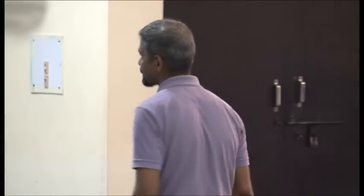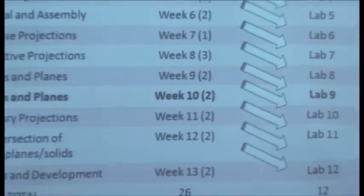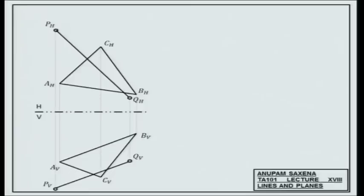Lines and planes — the interaction between them, the way they interact is by intersection. This would be lecture number 19. Given a line segment and a plane, and given the projections on a horizontal plane and a vertical plane, how do you figure if these two entities intersect? Just by looking at the figure, would you know? You would not know.